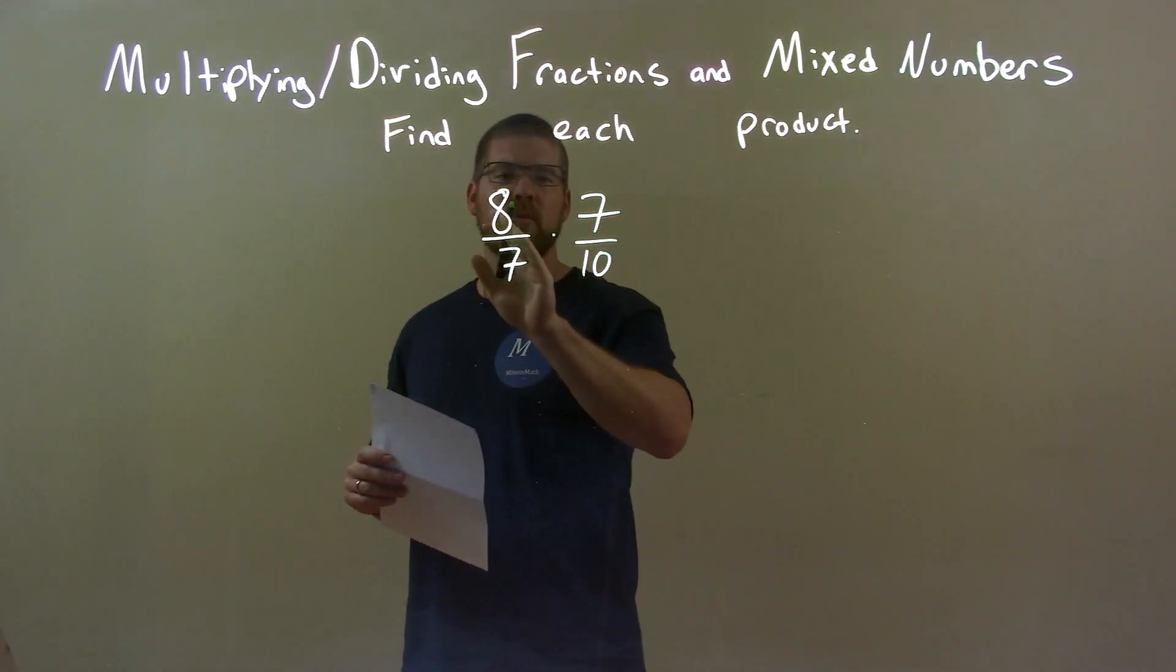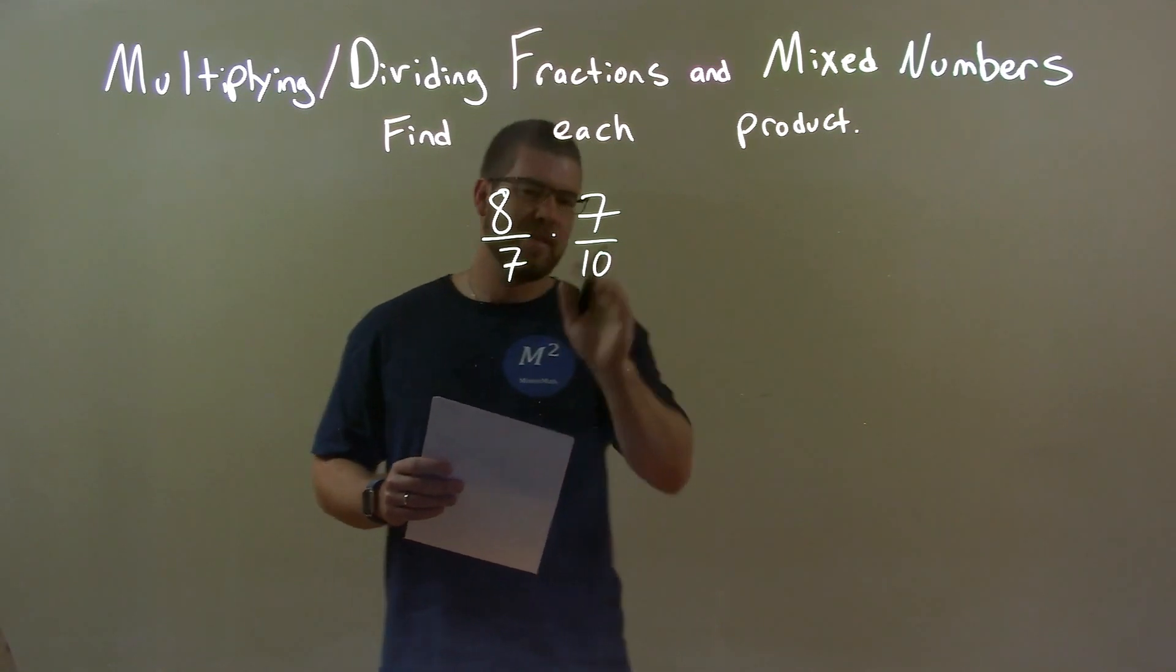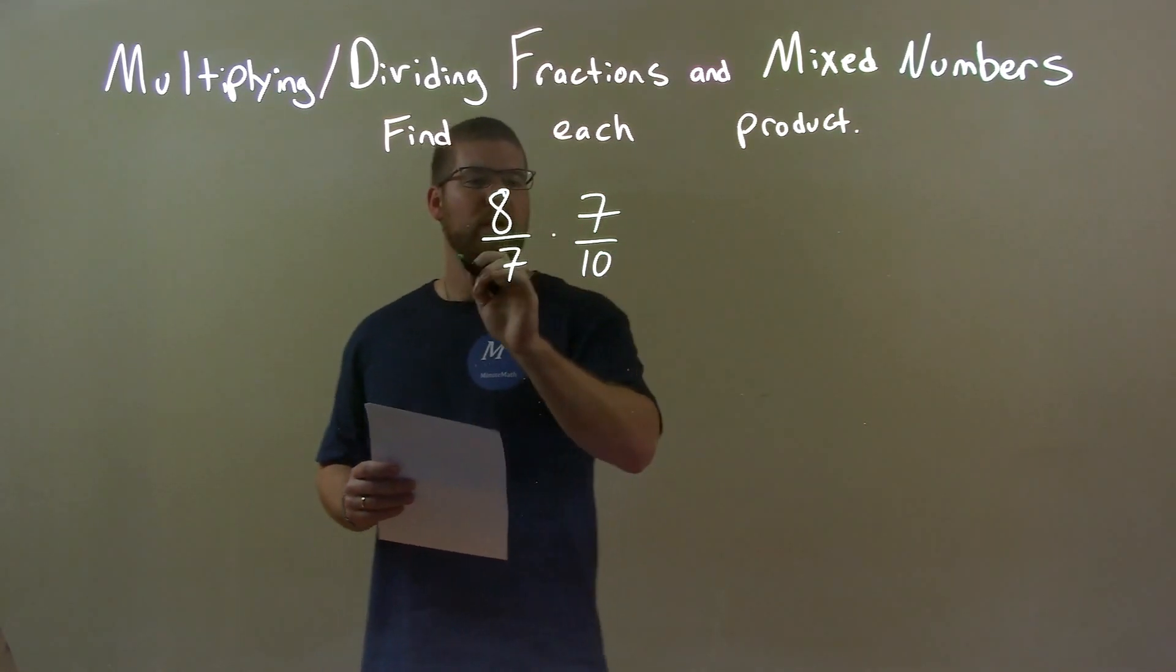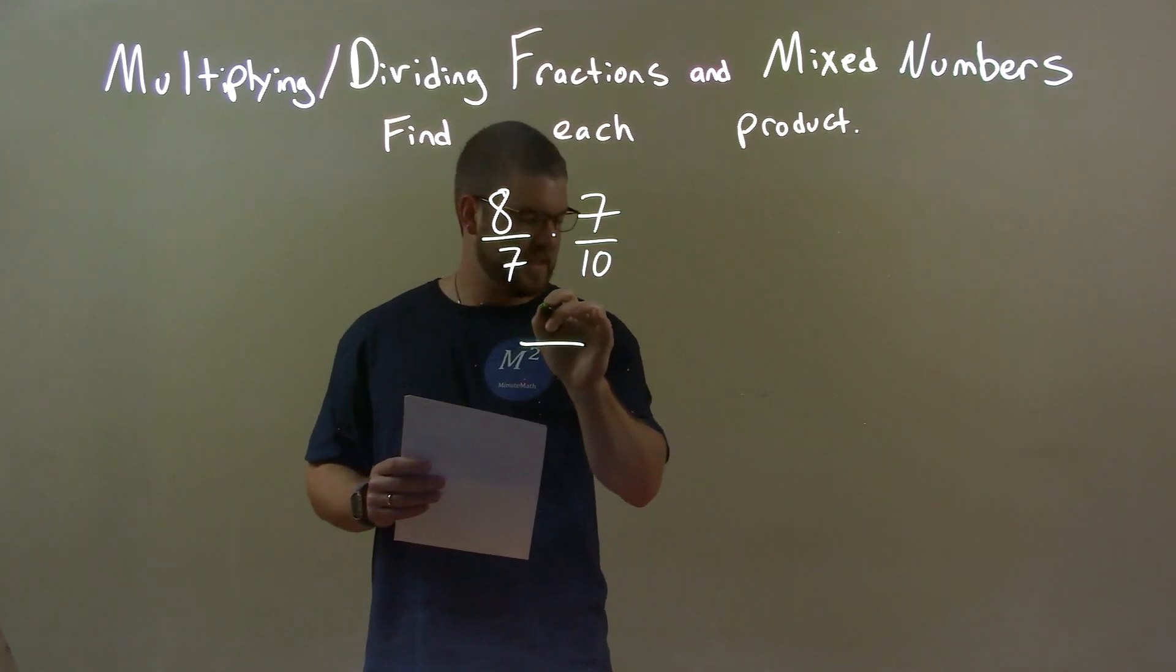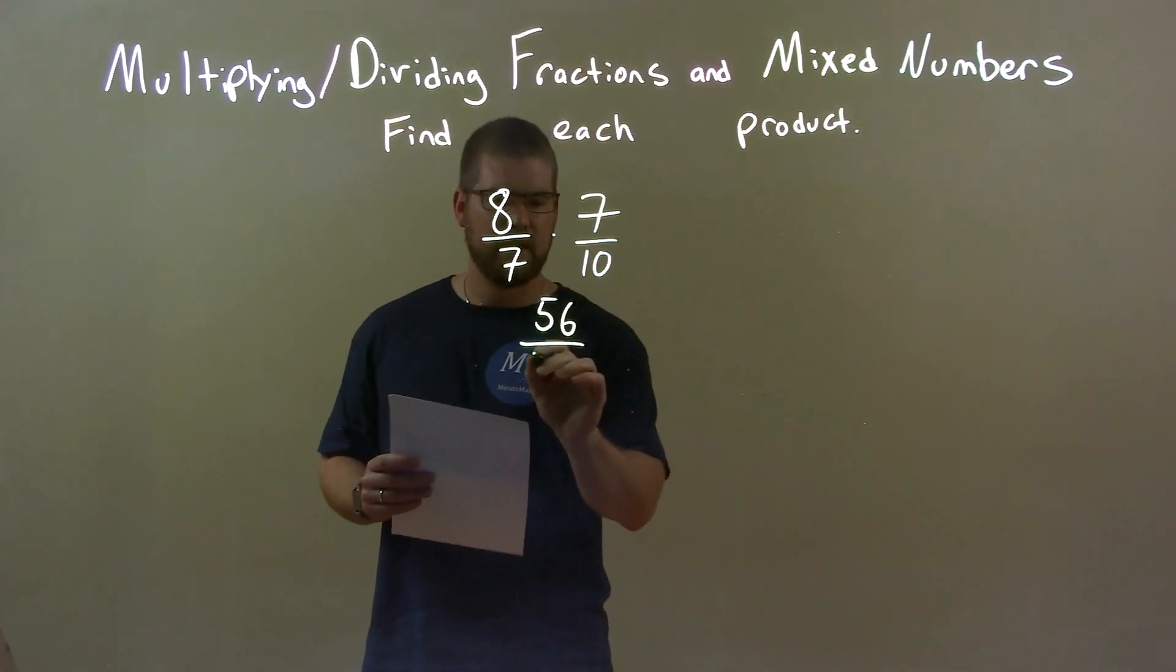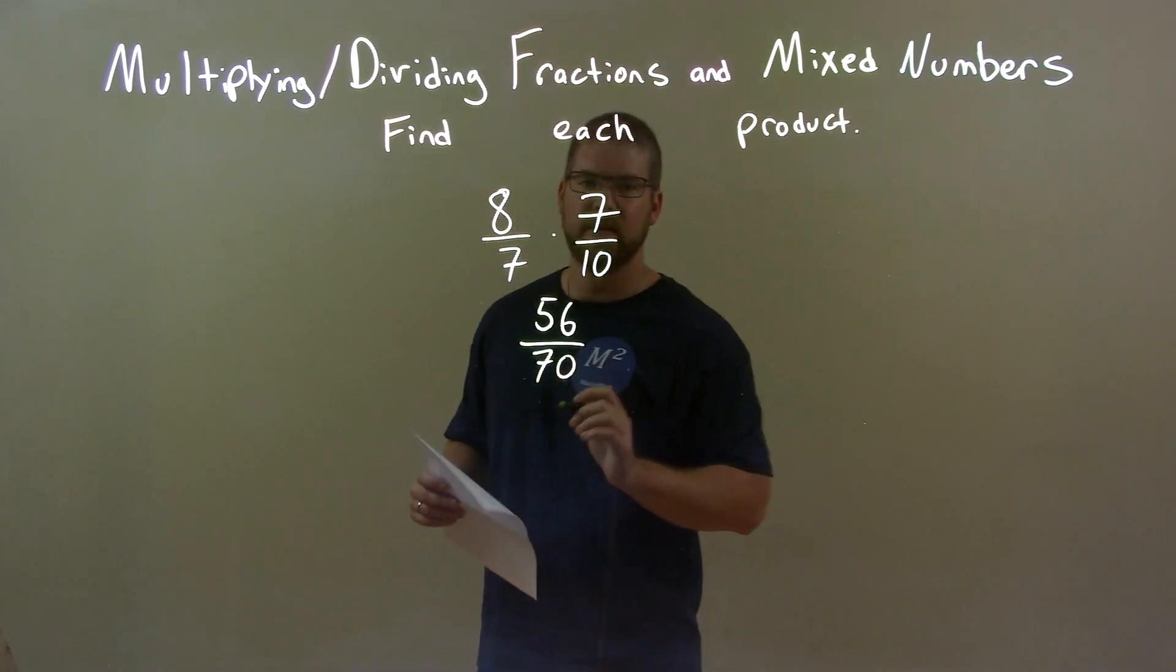Well, again with multiplication we multiply across the numerator and then across the denominator. So we multiply across the numerator, 8 times 7 is 56, and 7 times 10 is 70.